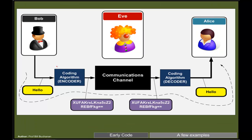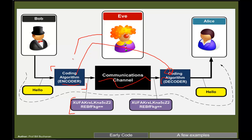In our first coding model, on one end we have an encoder that takes plain text and converts it into a coded format, sent over a communication channel. On the other side there is a decoder that normally does the reverse. As long as Eve doesn't know the encoding process, she cannot determine the decoding process — so as long as Bob and Alice share the secret process, the message stays secret.